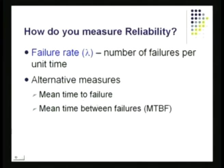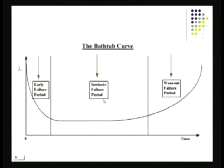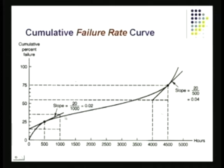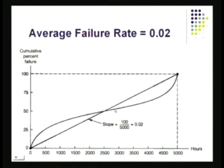Getting back to the bathtub curve: early failure when lambda is high, then lambda becomes quite low in the intrinsic failure period (the service period), then lambda begins to rise again in the wear-out period. The cumulative curve tends to flatten out during the service period. Initially there is some decay, reliability begins to improve, and then as the product begins to wear out, reliability begins to change. We are most interested in the service phase, where the slope is smallest and failures per unit time are also smallest.